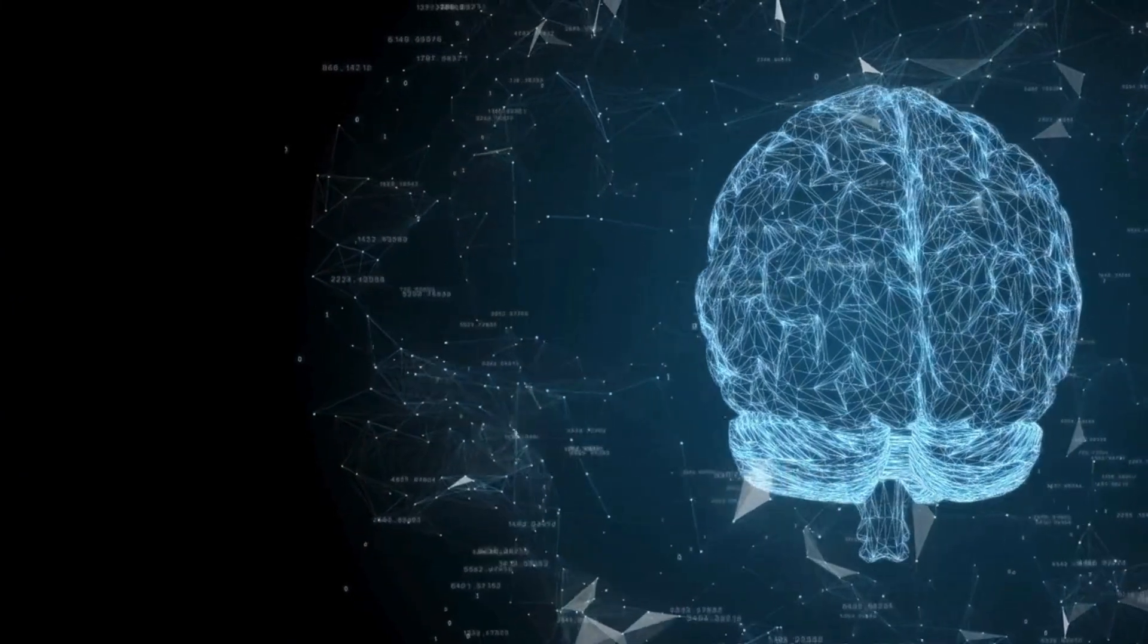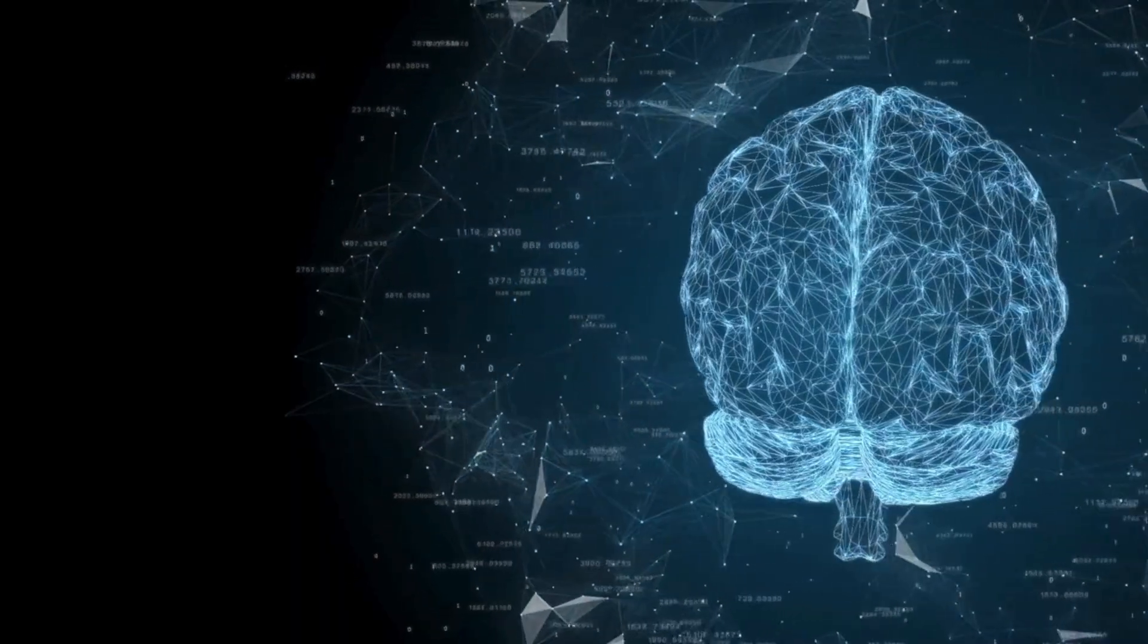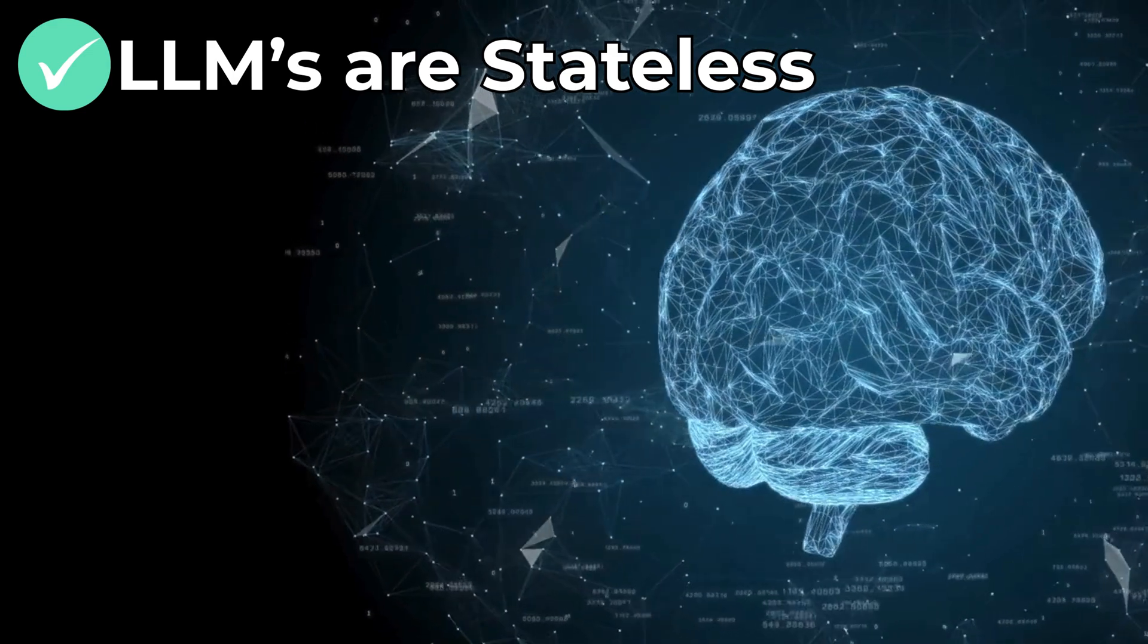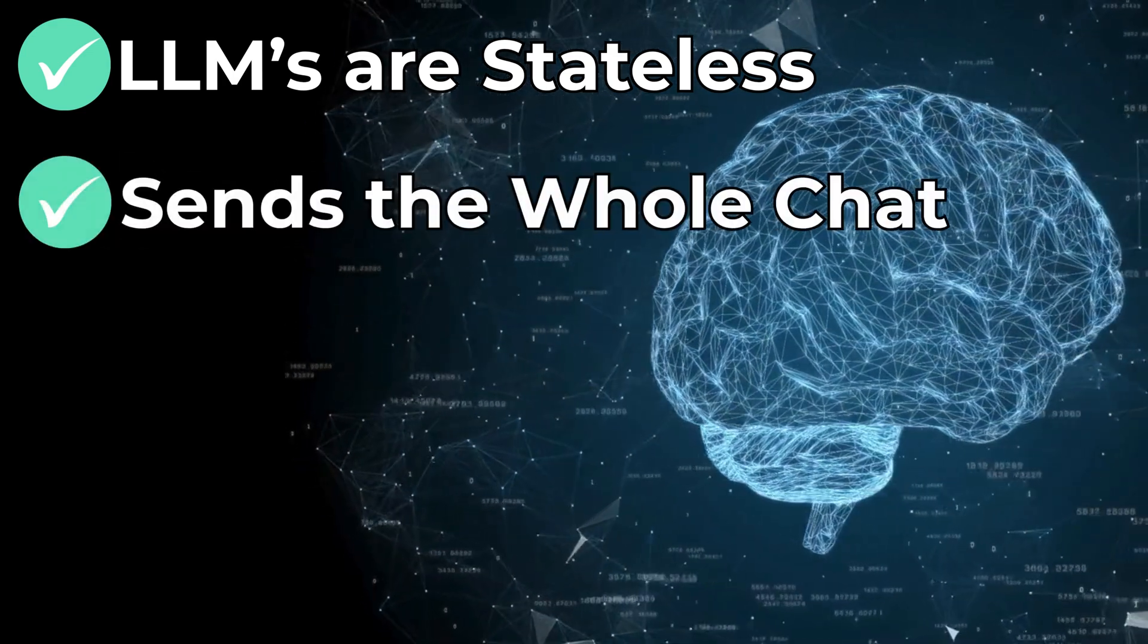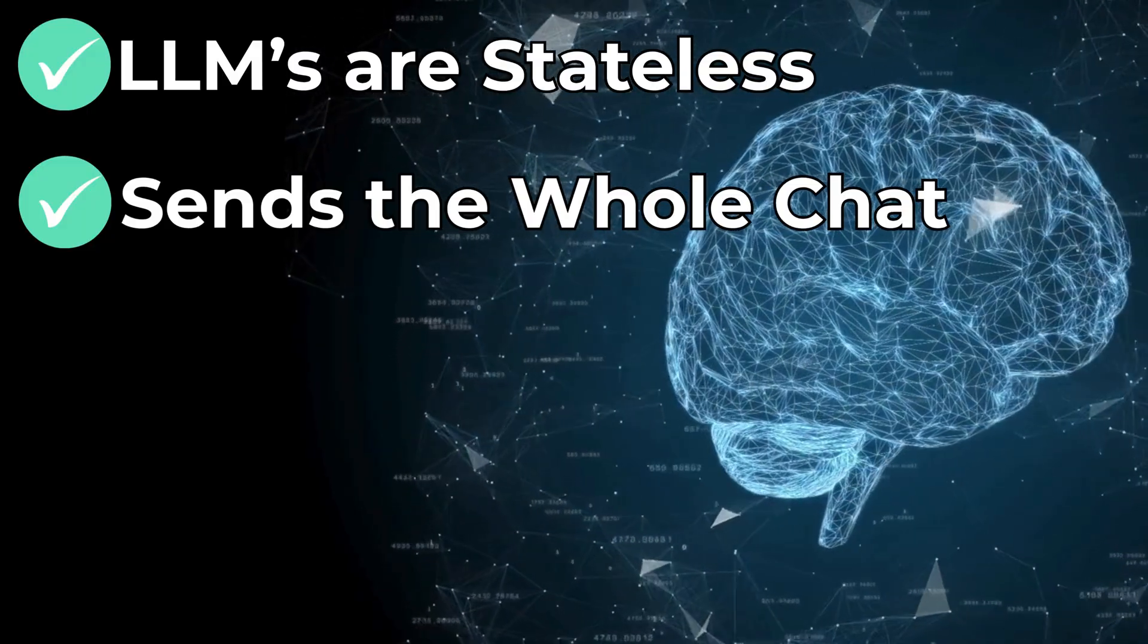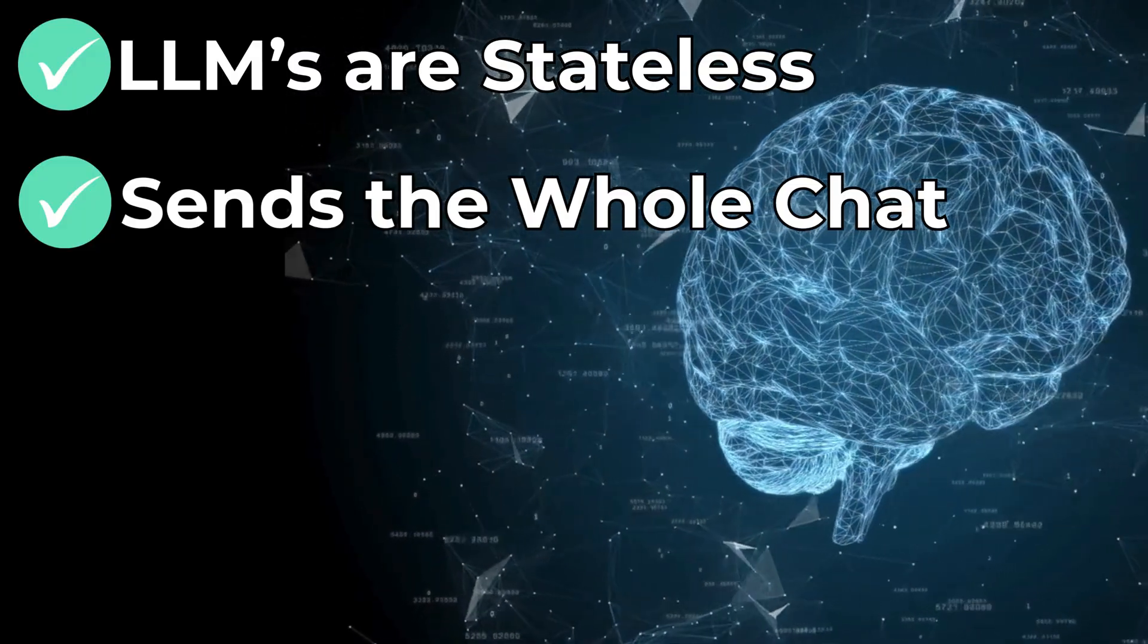So how do you actually reduce usage? The first method is tricky because it's not a known fact. But LLMs are stateless. That means that every time you send a new prompt, it includes the entire conversation history, unless you tell it otherwise.